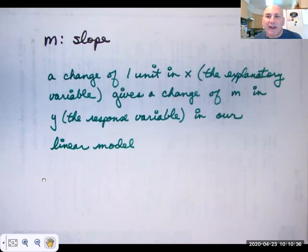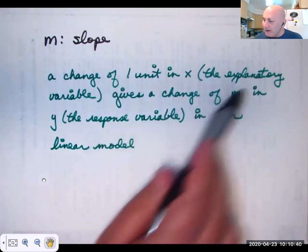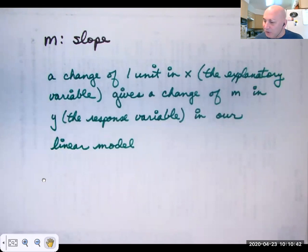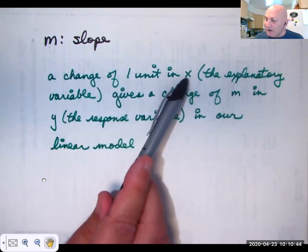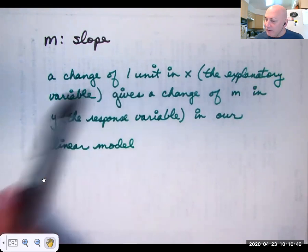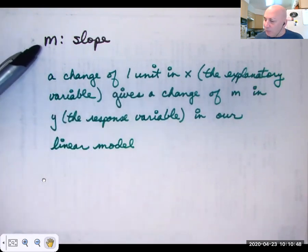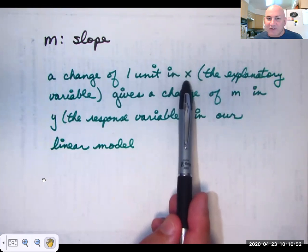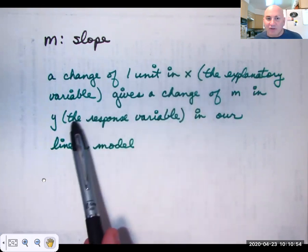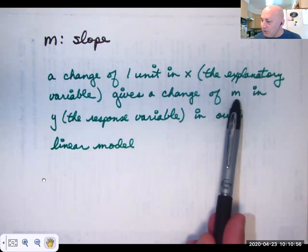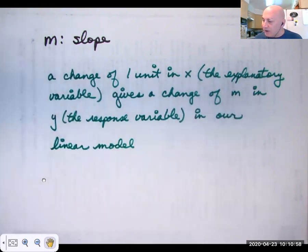The slope is Y over X. Y in statistics is a response variable. X is the explanatory variable. So if you set the denominator X equal to one, then your slope says that a change of one unit in the X direction will give you a change of M units, the slope, in the Y direction, because it's Y over X. And if X is one, then Y must equal M, the slope.